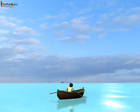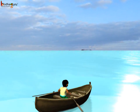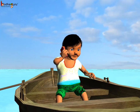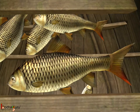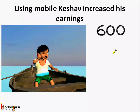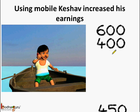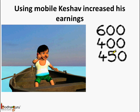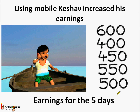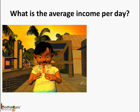In the story we saw later, Keshav started using a mobile phone to make deals, and this way his average earnings increased. One day he earned 600, another day he earned 400, then he earned 450, then 550, and then 500 rupees. So these are the earnings for 5 days. Now can we figure out what is the average income per day?